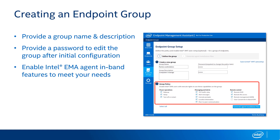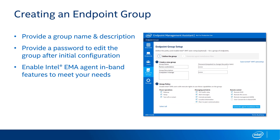This is also where you would go through and enable in-band management features for the Intel Emma agents. So if you wanted to turn user consent on or off, or even completely disable remote KVM control of the system, this is where you go through and define that policy for the in-band agent.